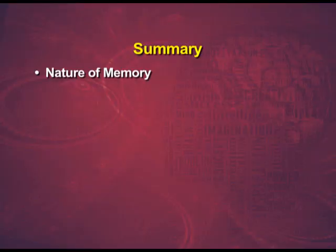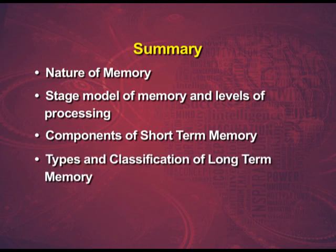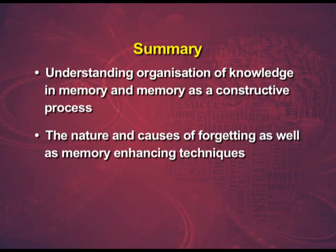With this, we conclude the last section of the chapter on human memory. To summarize, we first learnt about nature of memory, stage model of memory, and levels of processing. We then moved on to components of short term memory, types and classification of long term memory. This was followed by understanding organization of knowledge in memory and memory as a constructive process. We then moved on to nature and causes of forgetting, as well as memory enhancing techniques. Thank you.